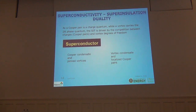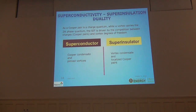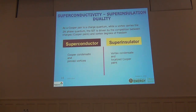There are several equivalent languages for this. We can say that a superconductor is the phase where we have a condensate of Cooper pairs and the vortices are pinned — because the condensate prevents their motion. Inversely, talking about the superinsulator, we can say that we have a vortex condensate there, which blocks the propagation of Cooper pairs.